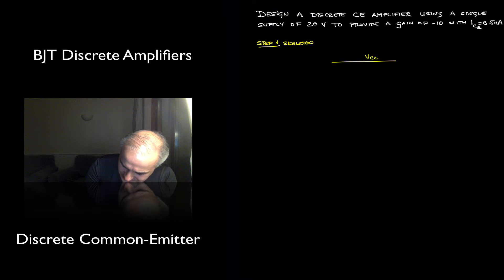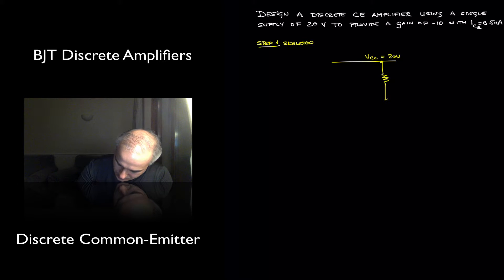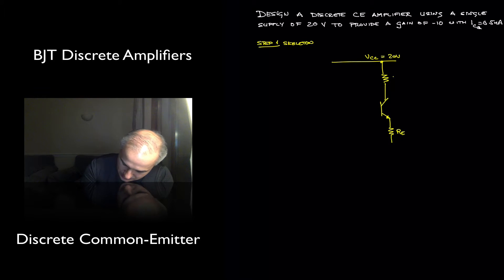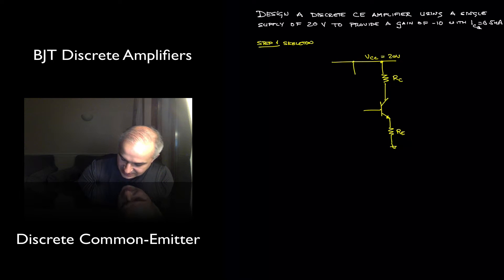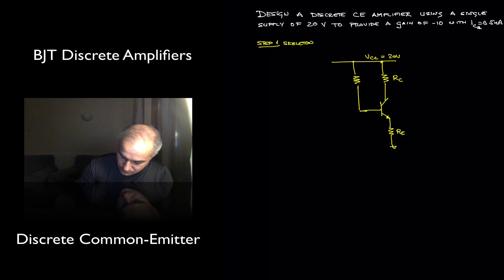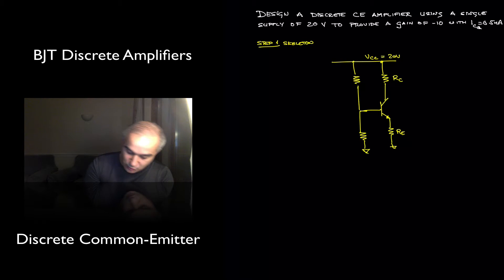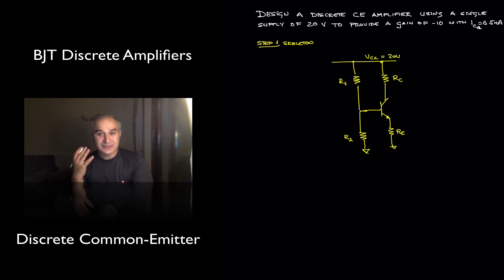So I'm going to have here my VCC which is going to be 20 volts, and I have my collector resistor going to my transistor, and we have an emitter resistor. We are just going to establish the bias conditions to make sure that the transistor is operating in the active region. Since we only have one power supply, we are doing this voltage divider biasing network with R1 and R2 to establish the bias conditions.